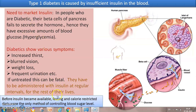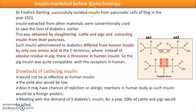Such people have to be administered insulin at regular intervals for all their lives — that is why we need to market insulin. Before insulin was available in the market, diabetics were managed only through fasting and calorie-restricted diets to keep blood sugar levels normal. Before biotechnology, Banting and his student Best were the first to extract insulin from the pancreatic cells of dogs, giving the idea of extracting insulin from mammals. Conventionally, insulin was obtained by slaughtering cattle and pigs.